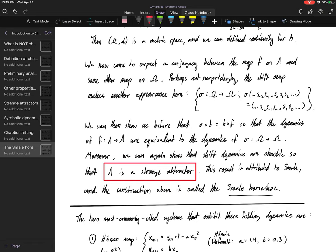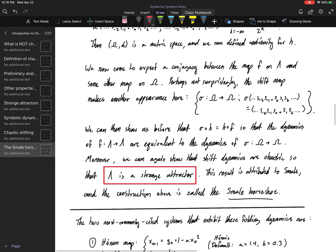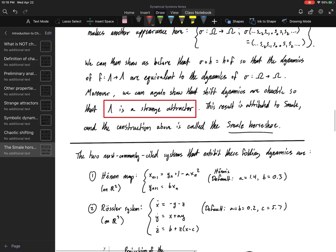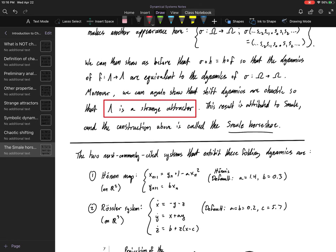We can jump to the conclusion that this shift map is once again chaotic on omega. That means that because F and sigma are conjugate through this homeomorphism, this itinerary mapping, not only does the Smale horseshoe map exhibit chaos, we can identify this limiting set lambda as a strange attractor. Because all these folds are contracting the area, making the area of the horseshoe smaller, we are creating an area contracting map, which means solutions tend toward this lambda as we map forward. This is an attractor that exhibits chaos, therefore it is a strange attractor.